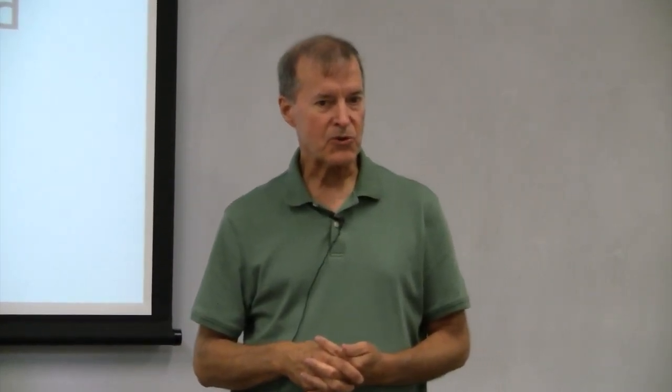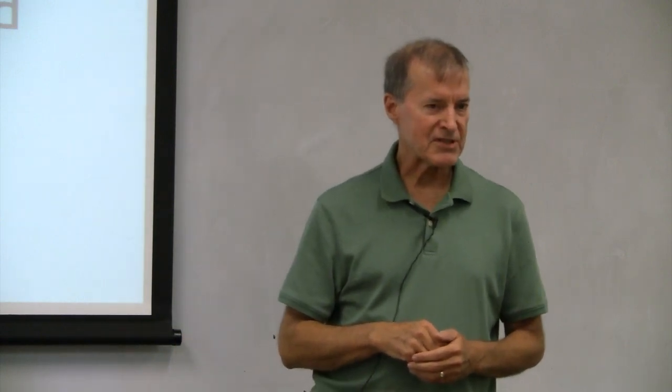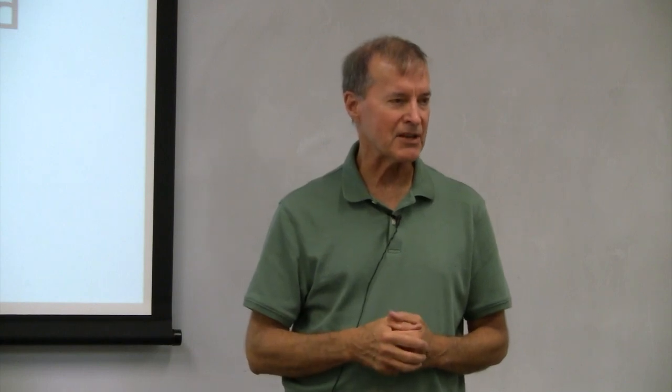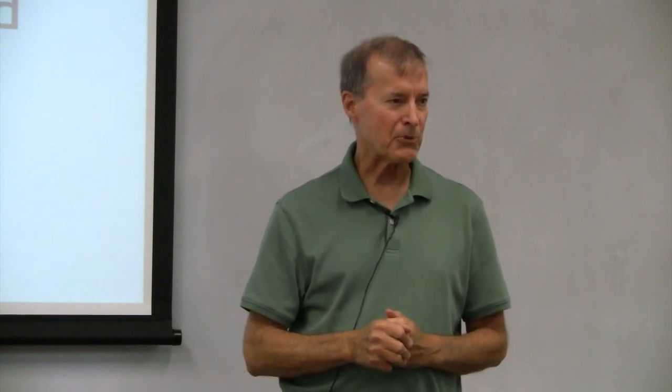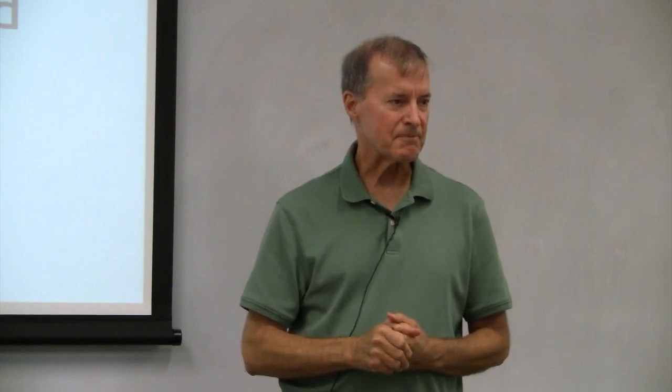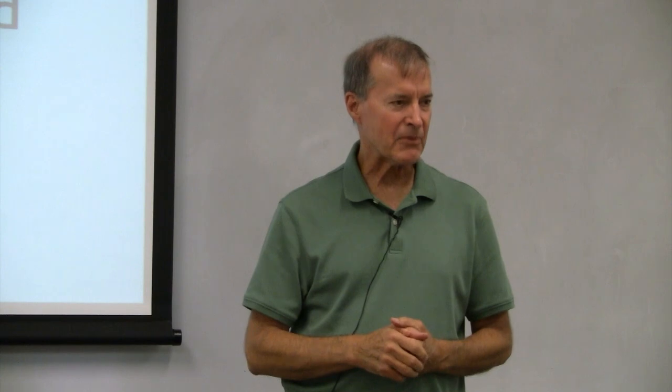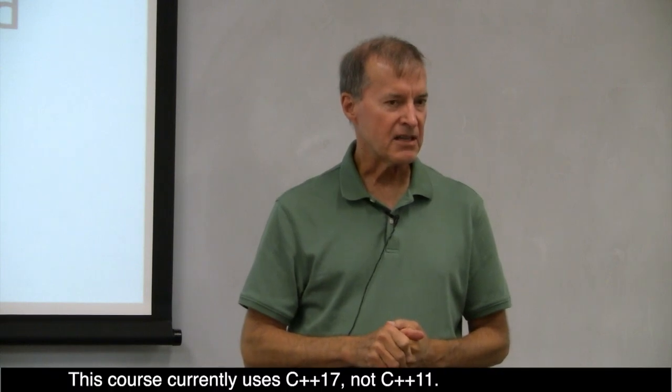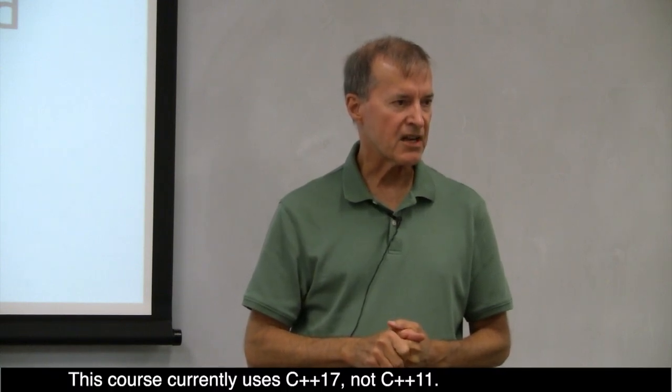What we will see is that it uses a random number generator to pick three elements at random from the array, and then from that sample — that three-element sample — it computes the median in order to estimate the median of the elements in the array so that it can do the split. And so that random thing is a C++11 feature.